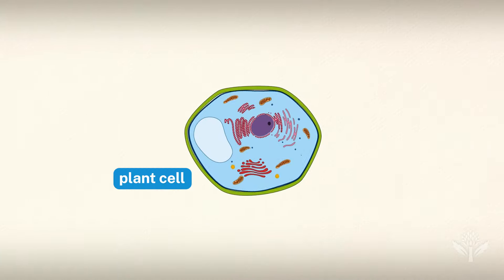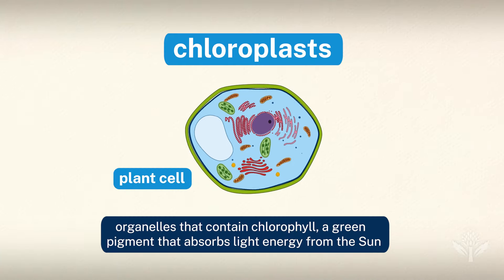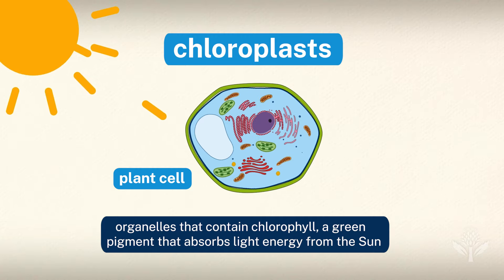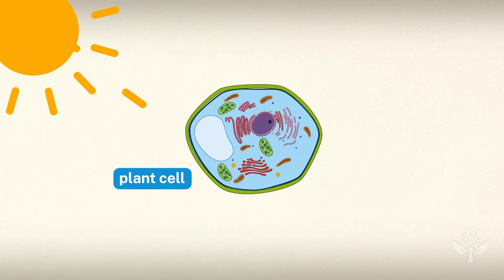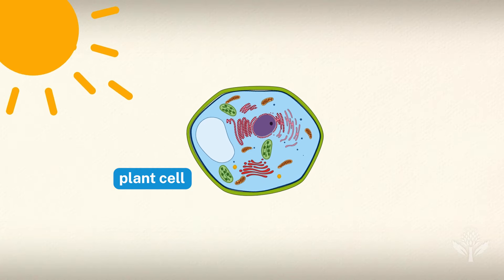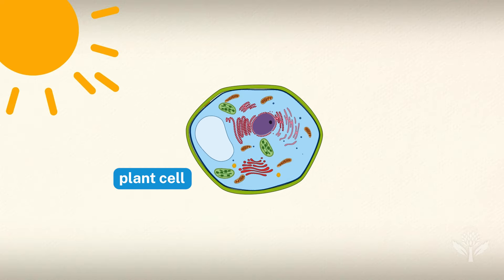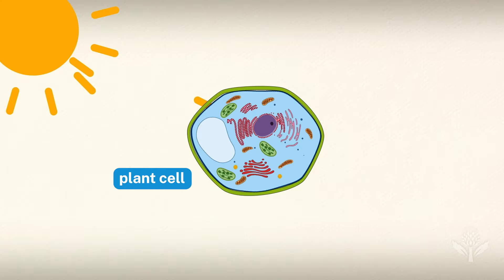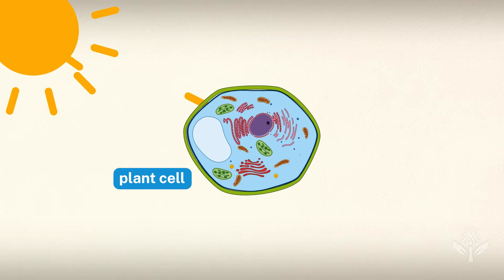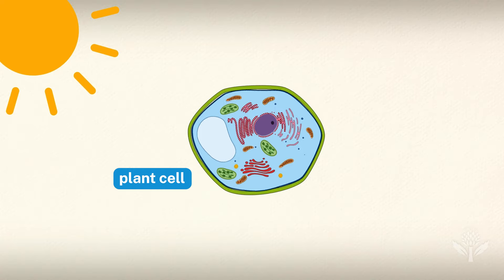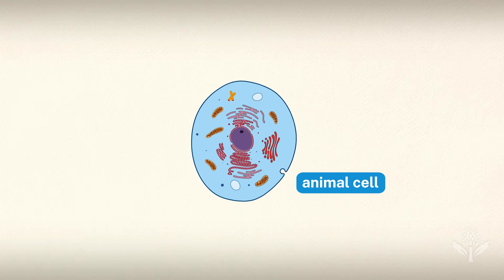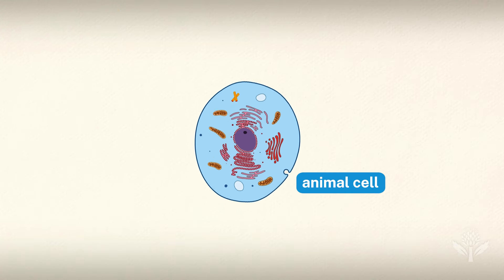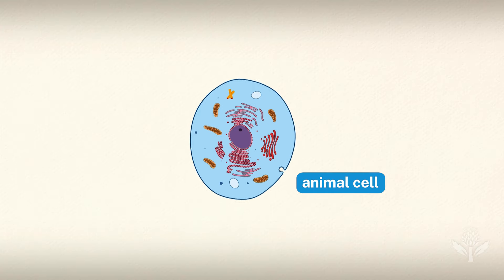Plant cells also contain chloroplasts, organelles that contain chlorophyll, a green pigment that absorbs light energy from the sun. During photosynthesis, light energy is converted into chemical energy for growth in the chloroplasts. The chemical energy can be stored for future chemical reactions, or consumed by the mitochondria, which convert it to usable energy. Animals don't need to perform photosynthesis, so energy production is the primary function of their mitochondria.